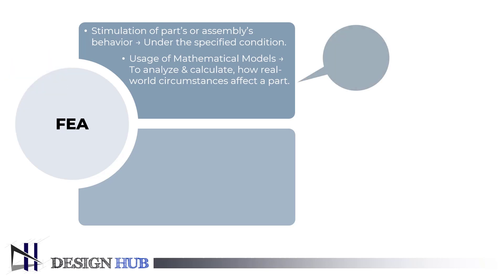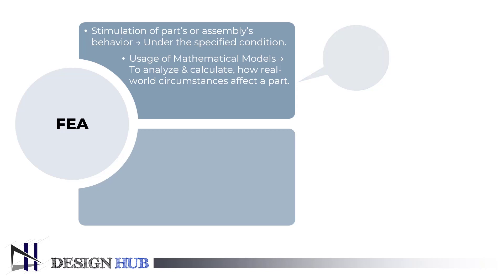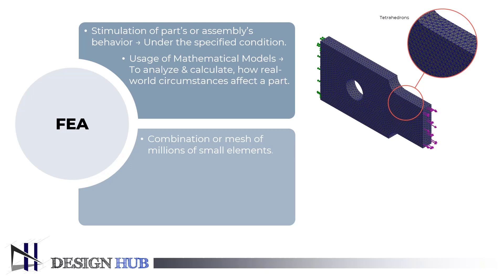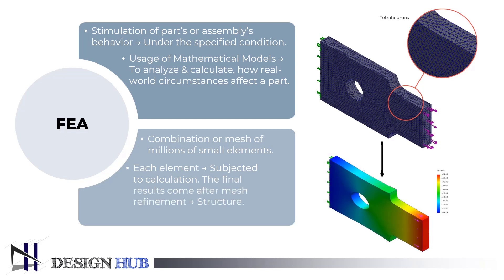Through the use of specialized software, these simulations enable engineers to identify potential issues in a design, such as stress points and weak areas. Millions of smaller elements are combined to form the shape of the structure being evaluated in FEA simulations. Each of these fine components is subjected to calculations, and the mesh refinements combined yield the overall structure's final result. These approximations are typically polynomial, with interpolations across the small elements, so values can be determined at some points but not all points.